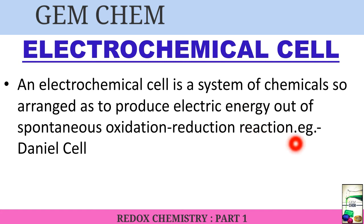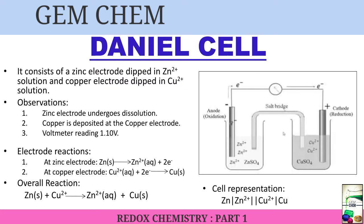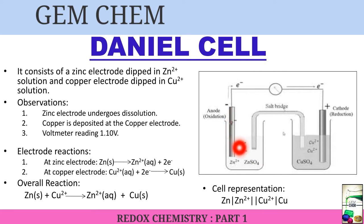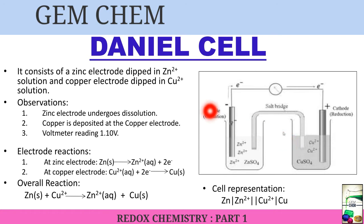An example of such a cell is the Daniel cell. The Daniel cell consists of a zinc electrode dipped in zinc sulfate (Zn²⁺) solution and a copper electrode dipped in copper sulfate (Cu²⁺) solution. A salt bridge is present between the two compartments. Its function is to allow passage of ions and complete the circuit.